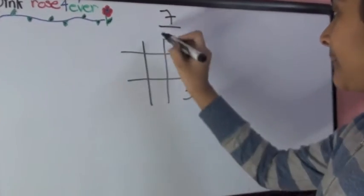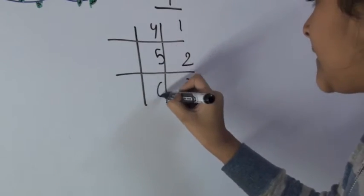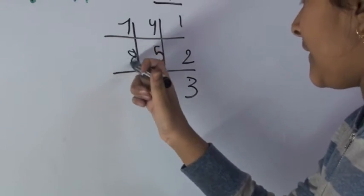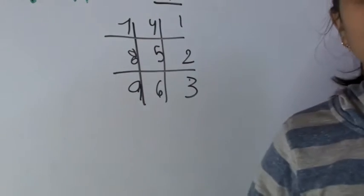Middle column, four, five, and six. Last one, seven, eight, and nine. Like so.